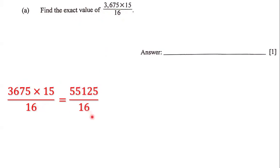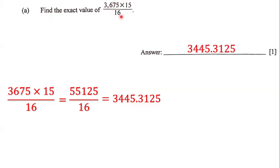Now we keep the denominator, which is 16. Next, we divide 55,125 by 16 and our answer is 3,445.3125. This is the exact value of the expression that they gave us, so 3,445.3125 is our answer.